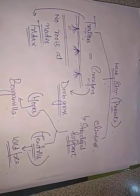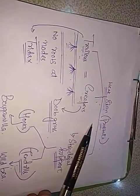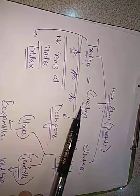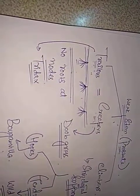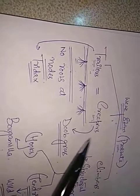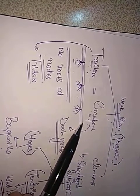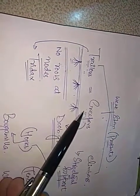Now let's talk about weak stems. The weak stem is prostrate over the ground. This weak stem is of three types: it can be a trailer, a creeper, or a climber. As far as trailers and creepers are concerned, both are horizontal stems. The only difference is that in creepers, there are adventitious roots at the nodes, whereas trailers are actually like creepers but there are no roots at the nodes.